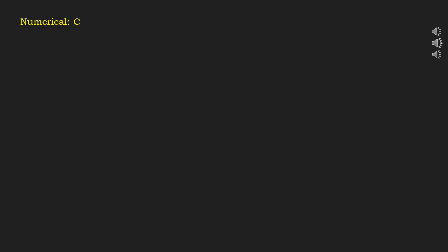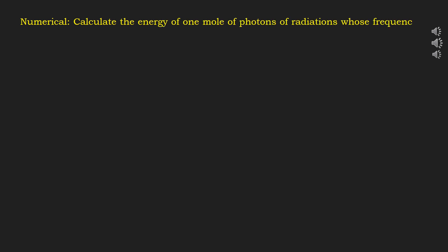Let's discuss some numerical problems related to the relation given by Planck's quantum theory of radiation. First: calculate the energy of one mole of photons of radiation whose frequency is 5 × 10¹⁴ Hz. The frequency given is ν = 5 × 10¹⁴ Hz.